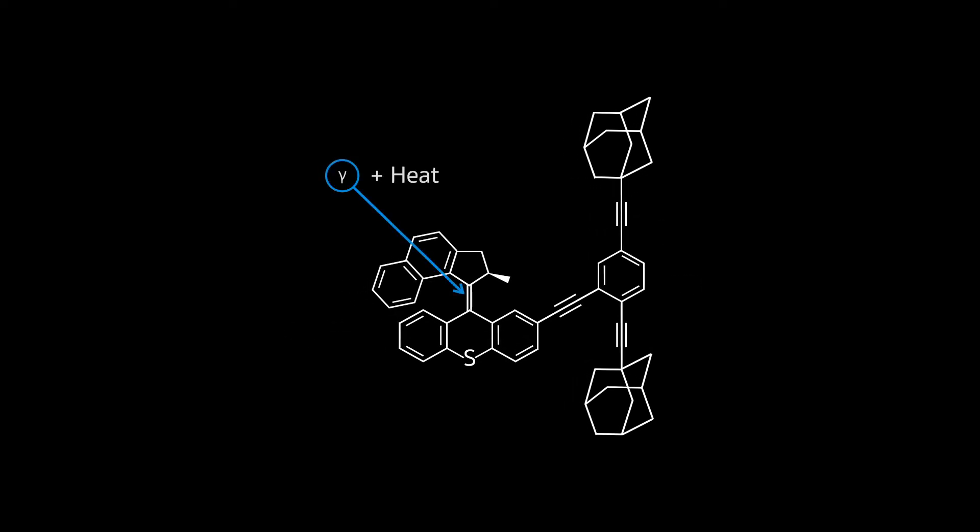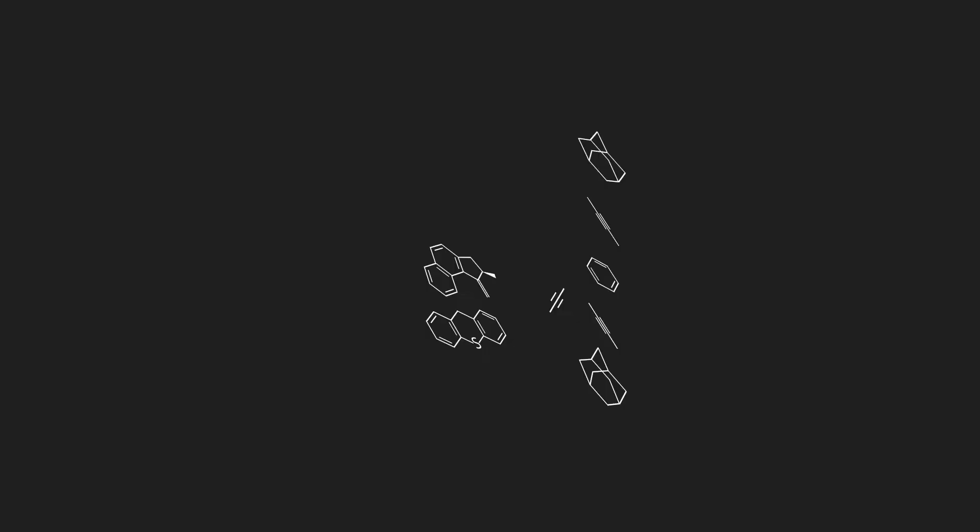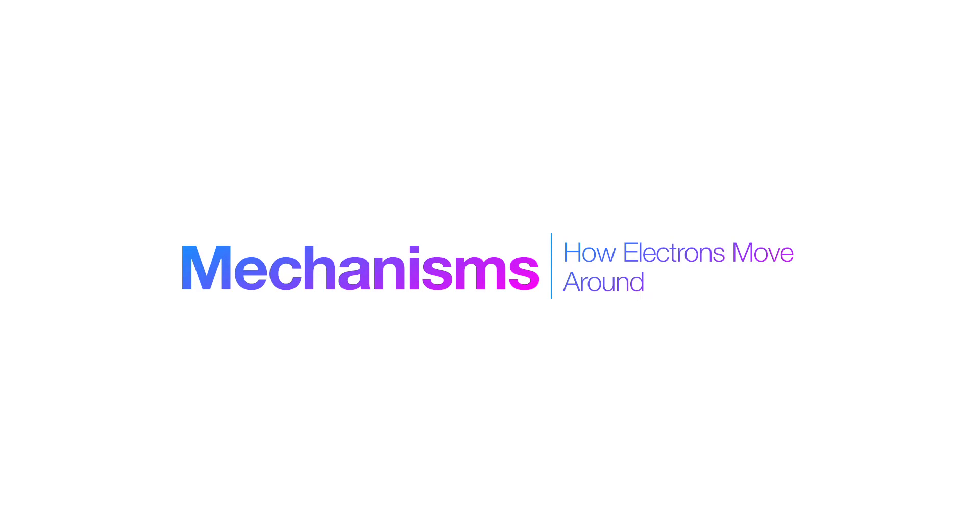You can see all of this in action in this nanocar design. sp3 rolls out like a wheel, sp2 is the motor, and sp functions as an axle. And now that we understand the sorts of places where electrons stay in, now let's move on to the way electrons can move around.